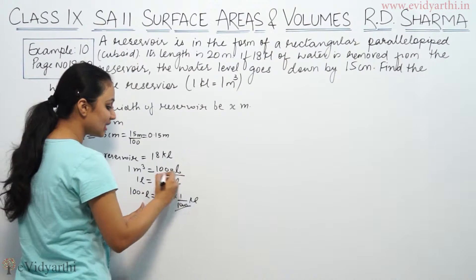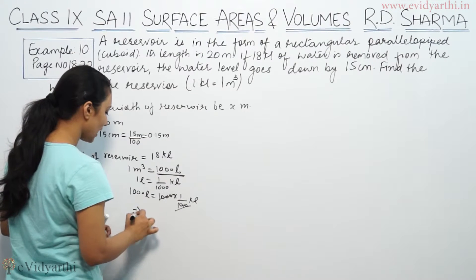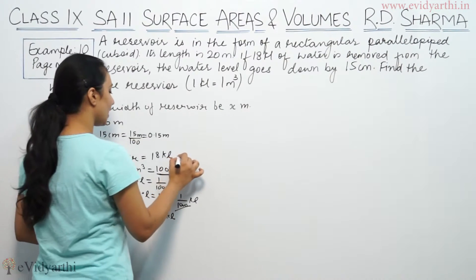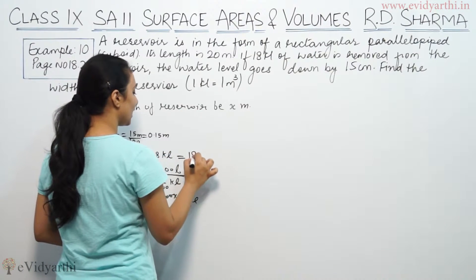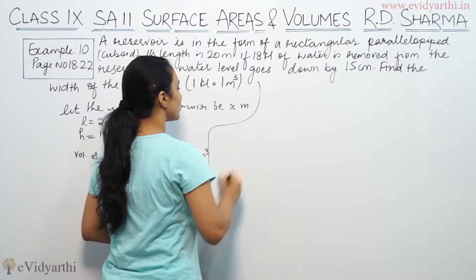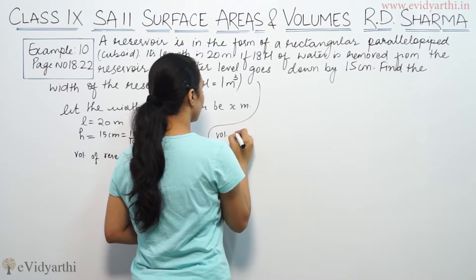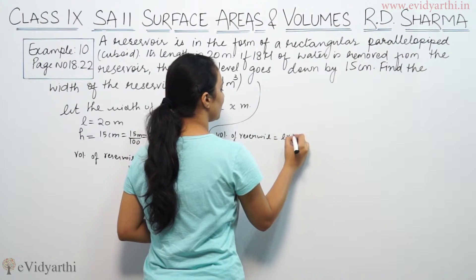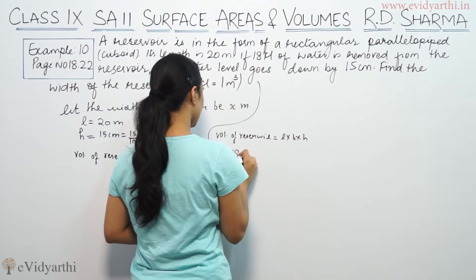So we can write this is the volume. So volume of reservoir is equal to L into B into H.